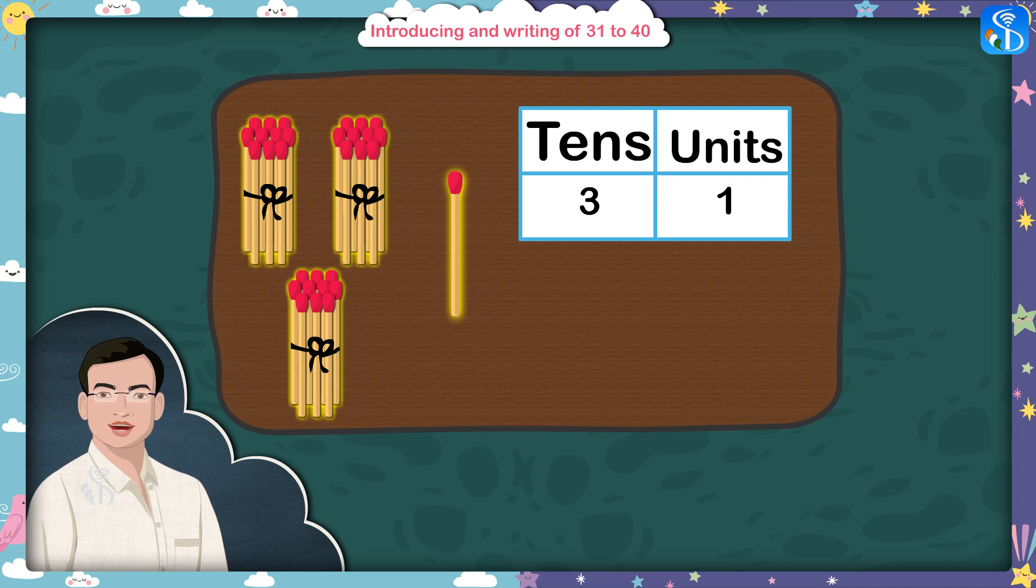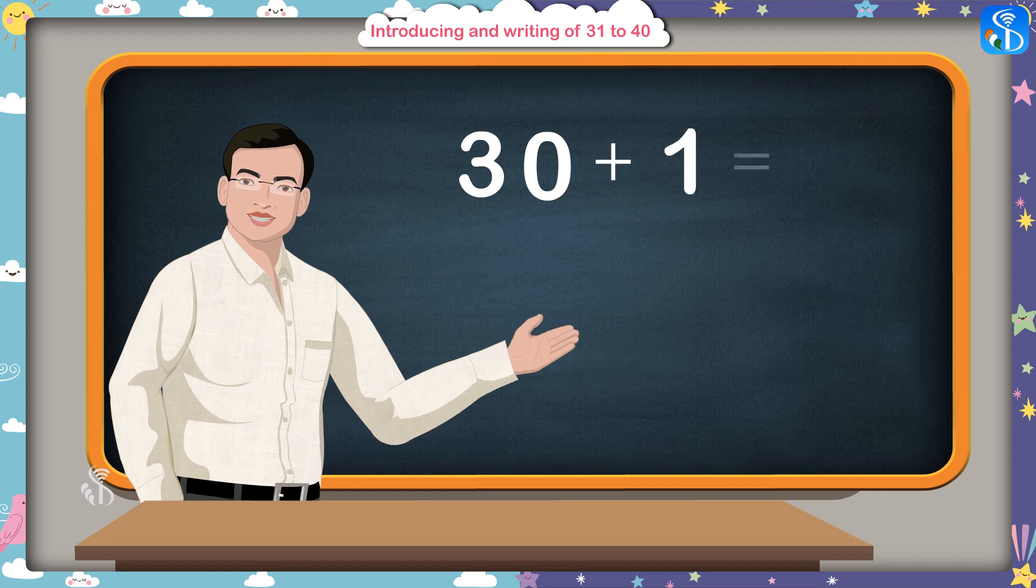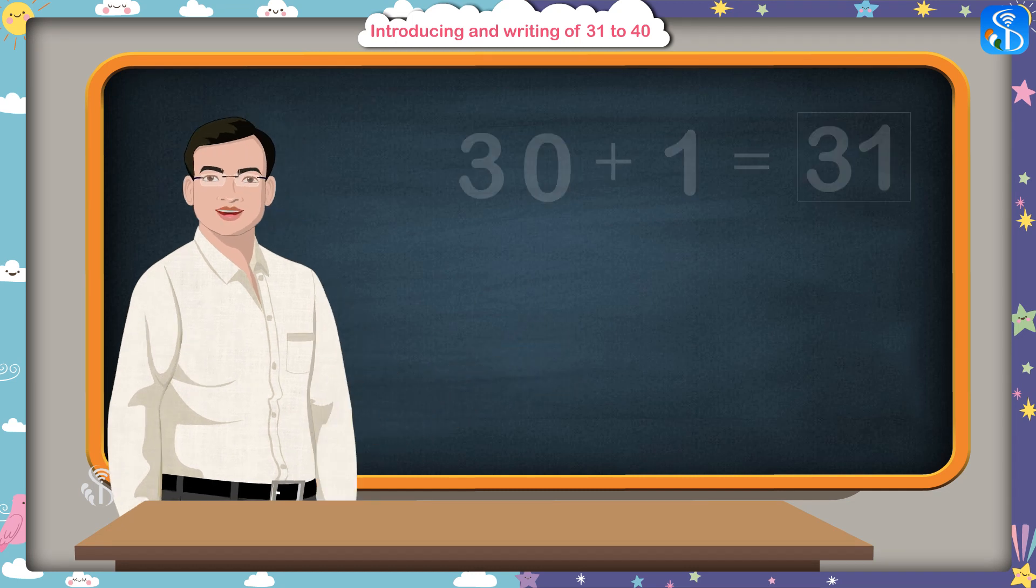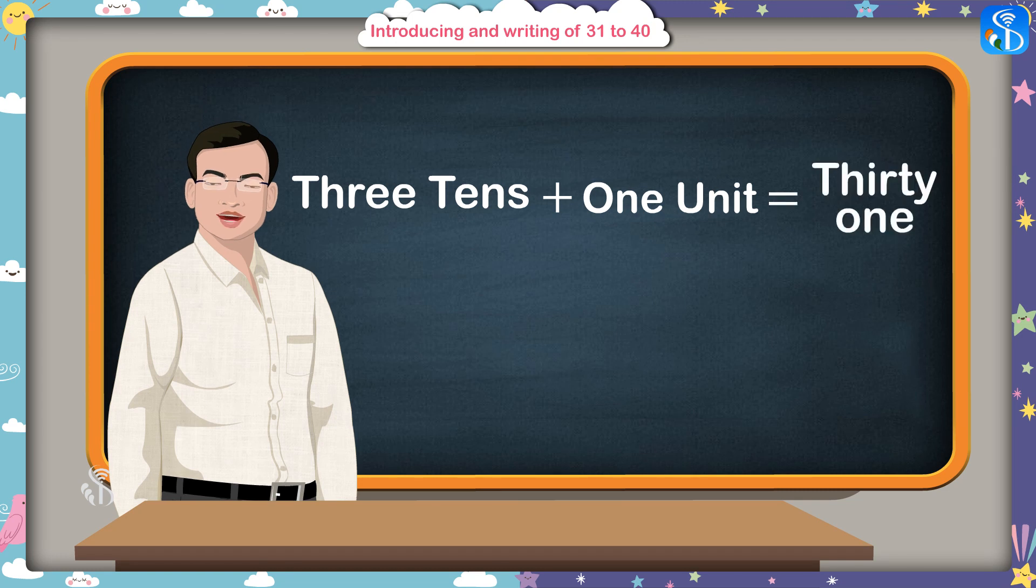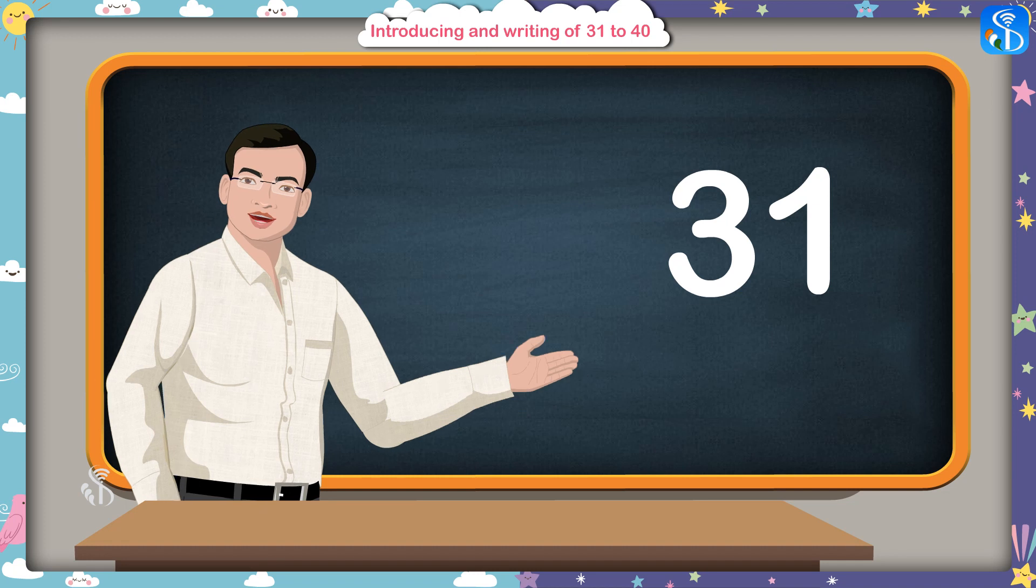That's right. Therefore, I will write one in units place. Children, this means that thirty and one make thirty-one. Or you can say, three tens and one unit together make thirty-one. And thirty-one is written as thirty-one.